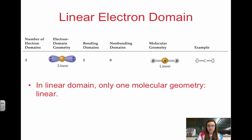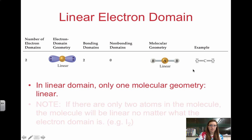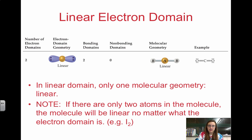In the linear electron domain, we only have a linear geometry, because we can't take one of these away and it changes shapes. If we take one of these away, it's still linear. If there are only two atoms in the molecule, the molecule is linear no matter what. If you only have two atoms, it's always linear.